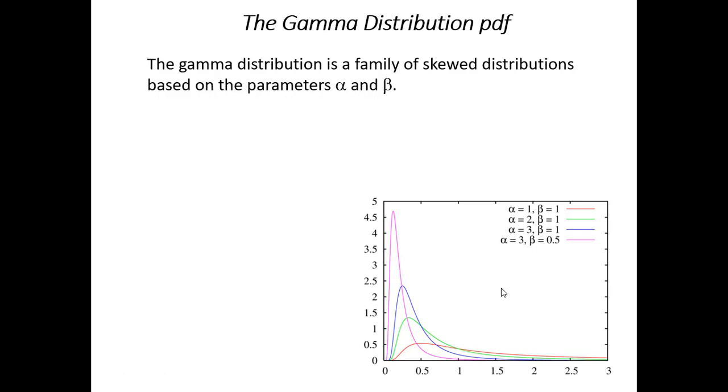Alright, the gamma distribution we could think of as a family of skewed distributions based on two parameters, alpha and beta. So, you could see the different shape here of the gamma distribution. That's why we call this a family of distributions.